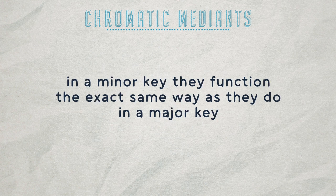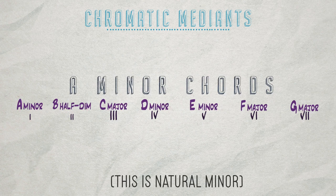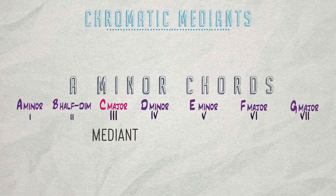In a minor key, they function the exact same way as they do in a major key, meaning we have six primary options for chromatic mediants in a minor key. Here are the chords in the key of A minor. Our three chord, which is our mediant, is C major. Our sixth chord is F major, the sub-mediant.